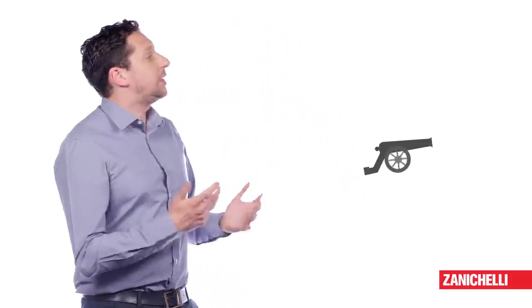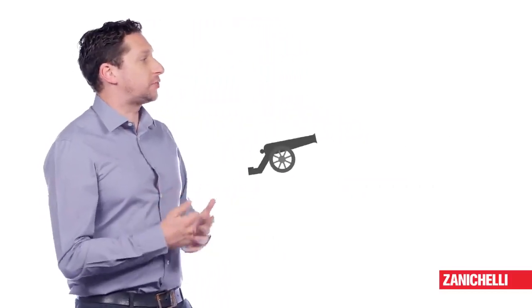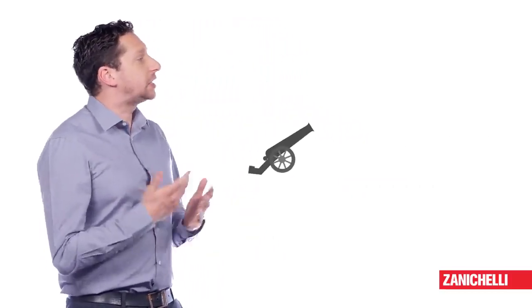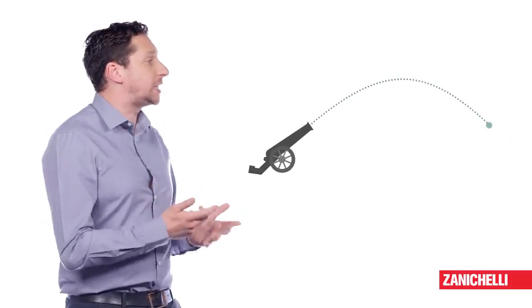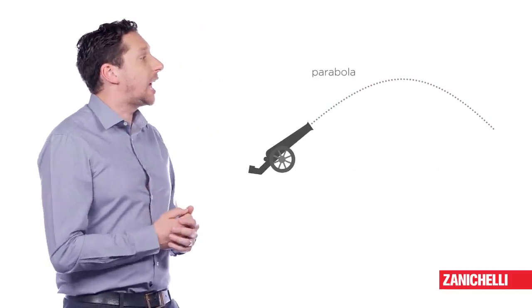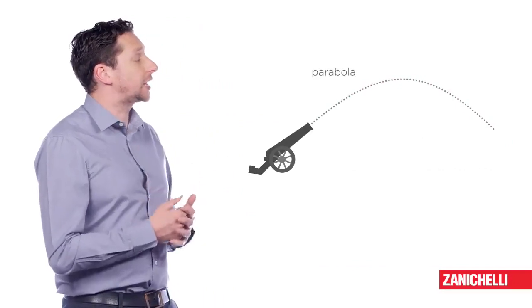Consider one of Newton's famous old designs, with which he imagined that every object launched parallel to the ground in theoretical absence of friction and at a sufficient speed would never fall back to the ground. In the real world, friction is ever-present, and the typical trajectory we can observe when we throw an object in our everyday life is a parabola, as in the launch of a cannonball.